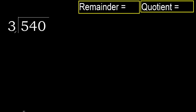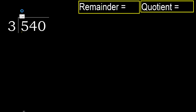540 divided by 3. 5 is not less, therefore start with 5. 3 multiplied by which number is nearest to 5 but not greater? 3 multiplied by 2 is 6 — 6 is greater. 3 multiplied by 1 is 3 — not greater. Ok, subtract, remainder is 2.